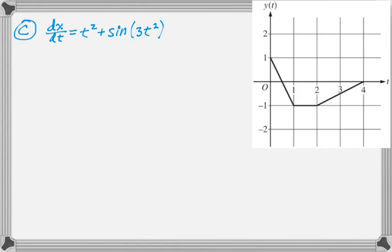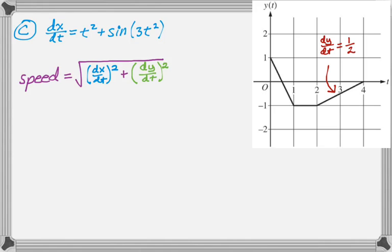The next question is to find the speed of the particle at t equals 3. Speed is the magnitude of velocity. So I need to know the velocity vector so I can find its magnitude. So it's square root of dx/dt squared plus dy/dt squared. So I know dy/dt is 1 half, and I definitely need a calculator for dx/dt.